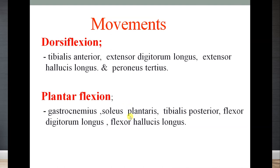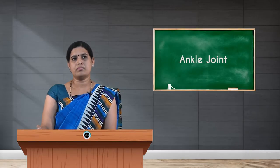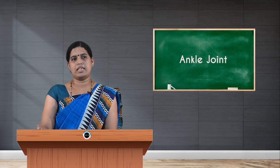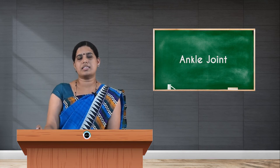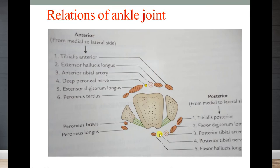The relations of the ankle joint: anterior relations are the muscles of the anterior compartment of the leg — from medial to lateral: tibialis anterior, extensor digitorum longus, extensor hallucis longus, and peroneus tertius — along with the anterior tibial artery and deep peroneal nerve. Posterior relations are the deep muscles of the posterior compartment: tibialis posterior, flexor digitorum longus, flexor hallucis longus, along with the tibial nerve and posterior tibial artery.